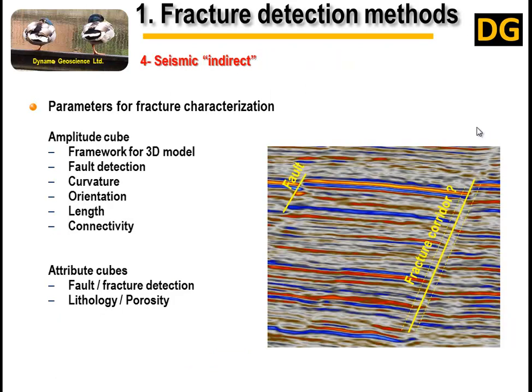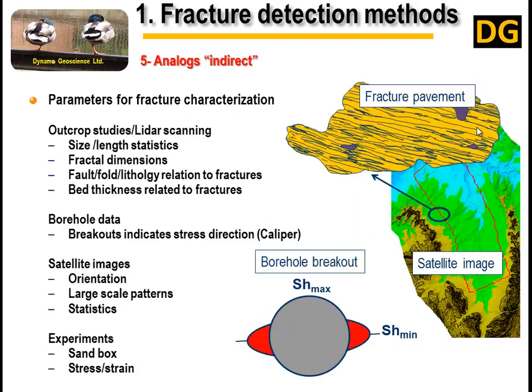Method number four is an indirect method through seismic. The amplitude cubes or attribute cubes remain a factor of seismic resolution, but it is worth a trial.